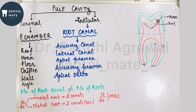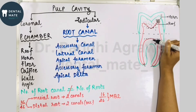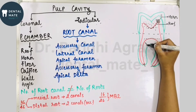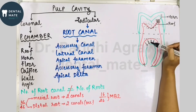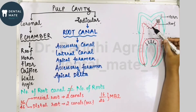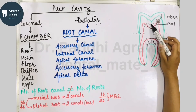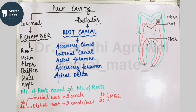The floor of the pulp chamber is parallel to the roof. In the roof, there is a dentine bounding region in the occlusal or incisal area, and in the floor there is a dentine bounding region in the cervical area. The floor of the pulp chamber is basically present near the furcation area.